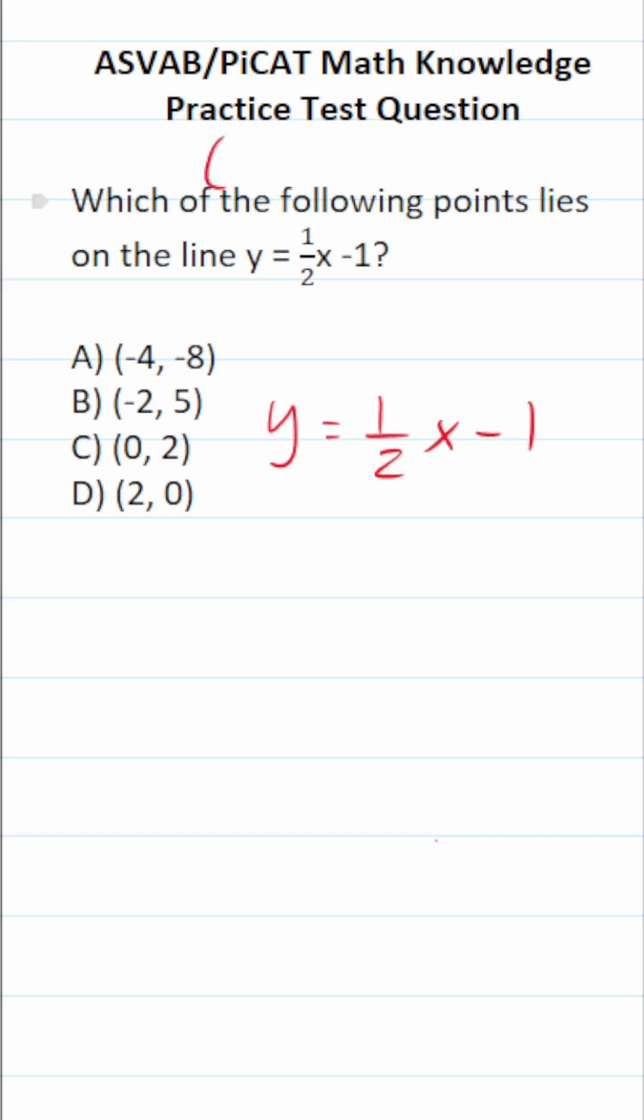Points are given as ordered pairs that come in the form x, y. The way we're going to check to see if any of these points is on this line is by using an x, y table.